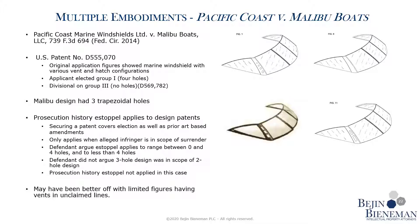Looking back at this case with the benefit of hindsight, it seems that Malibu boats might have been better served to originally file their various embodiments with the hatch and the holes in unclaimed lines. That way, if they needed to put those lines back in to obtain novelty or non-obviousness, they would have had that option, but in enforcement it would be clear that they were protecting this overall shape of the windshield — covering designs that may or may not have vents or front hatches.